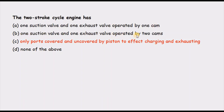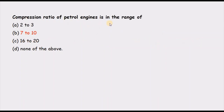Regarding two-stroke cycle engines and their valve arrangement: option A says one suction valve and one exhaust valve operated by one cam; option B says operated by two cams. Both A and B are incorrect because two-stroke engines do not use valves like four-stroke engines. The correct answer is: only ports covered and uncovered by the piston to effect charging and exhaust.